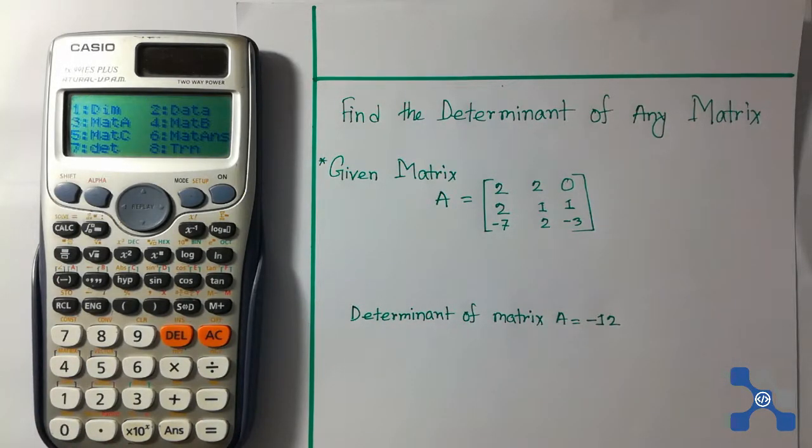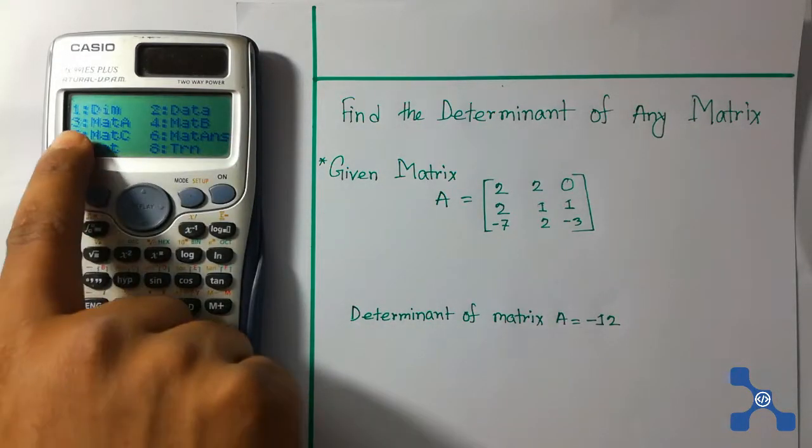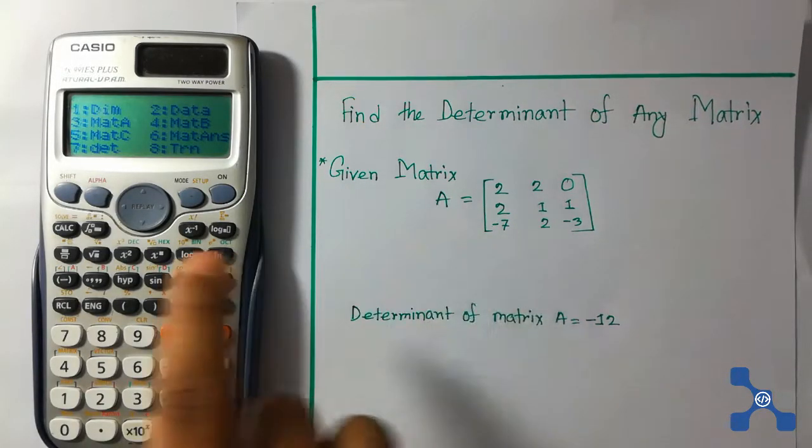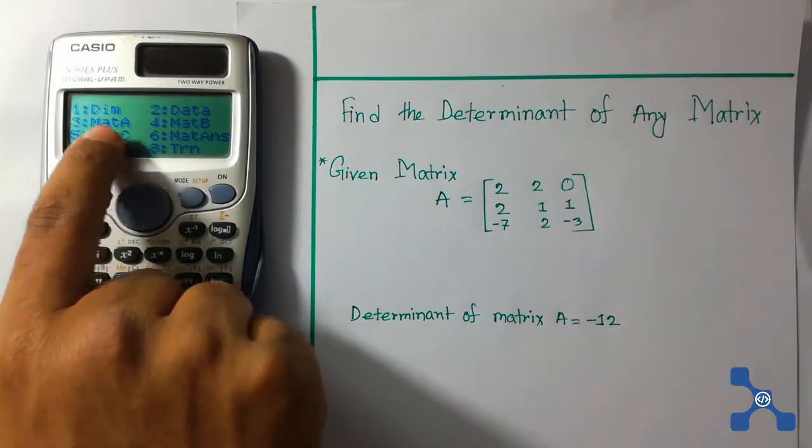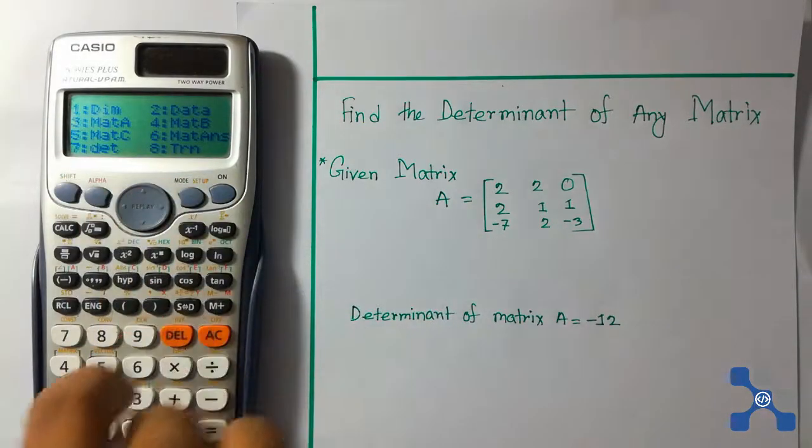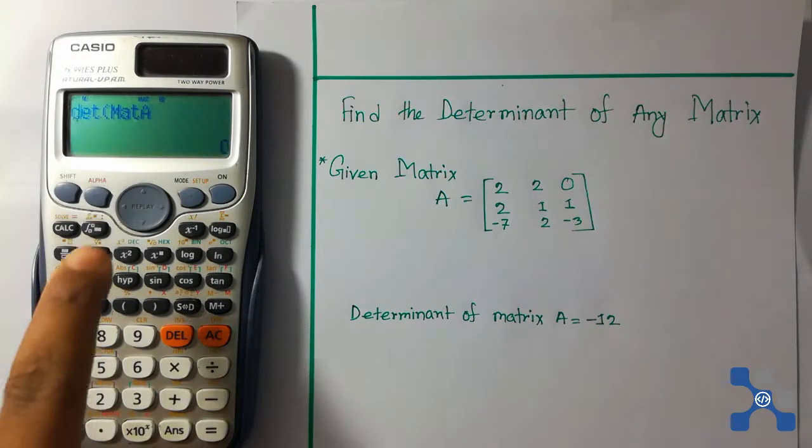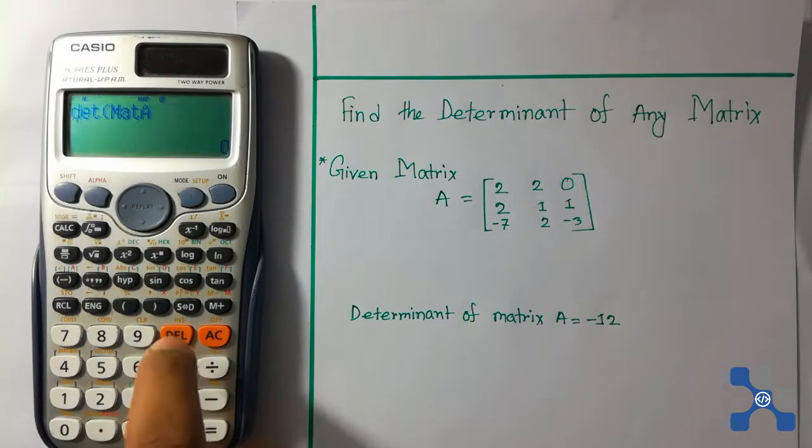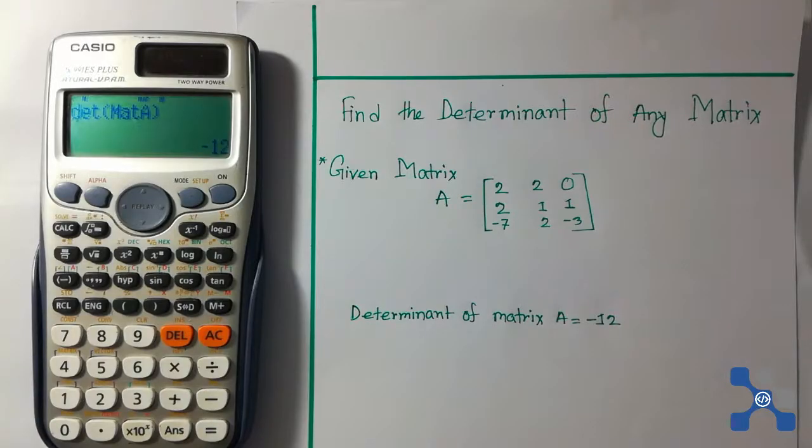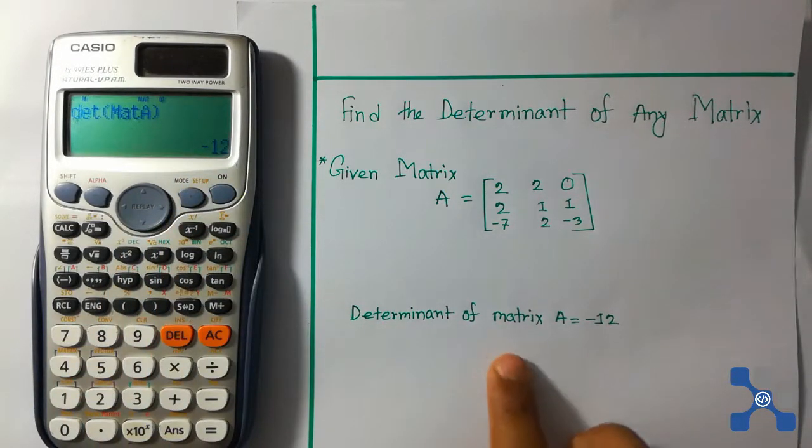We see there are again different functions. We loaded this matrix on mat A, and here mat A, 3 is for matrix A. Press 3. We see that here is mat A and then bracket close. Press equal button. We see that the answer is -12. Our answer is also -12.